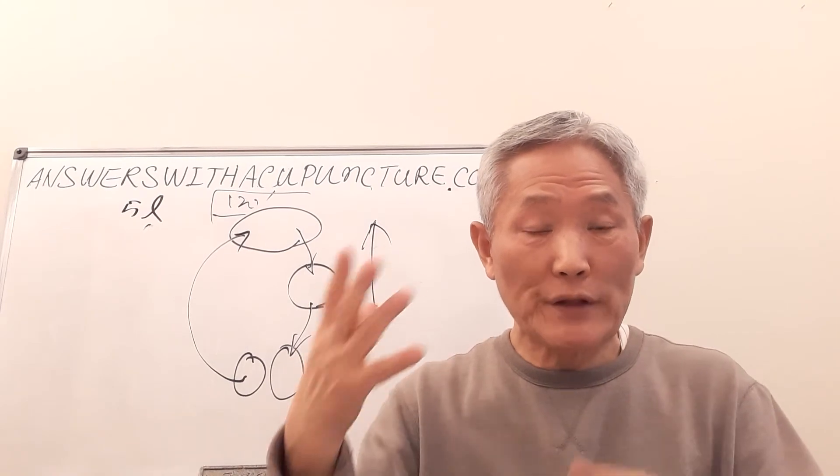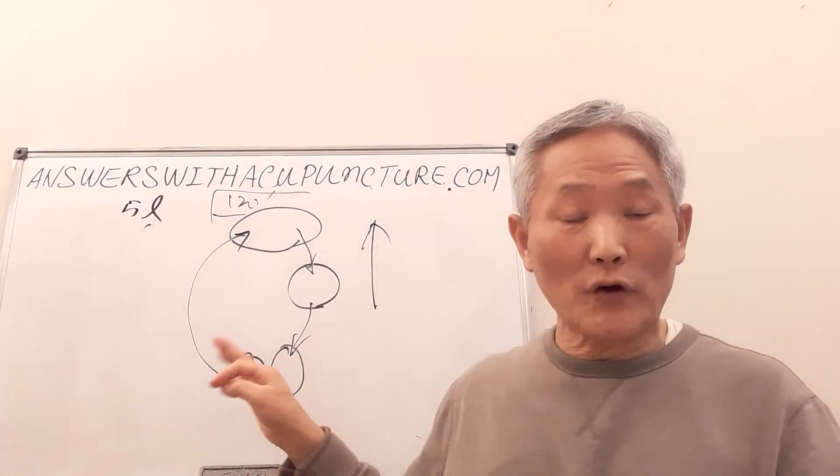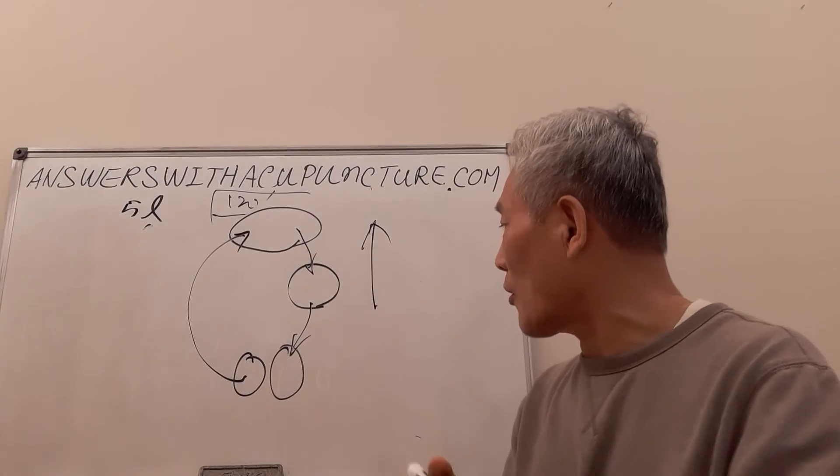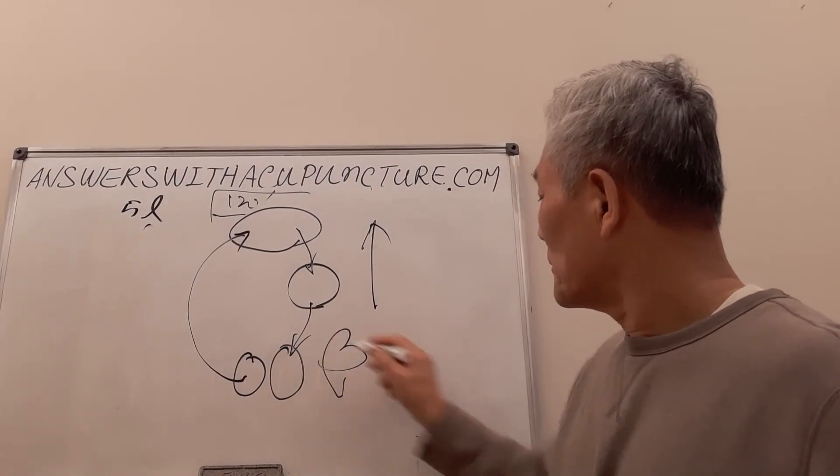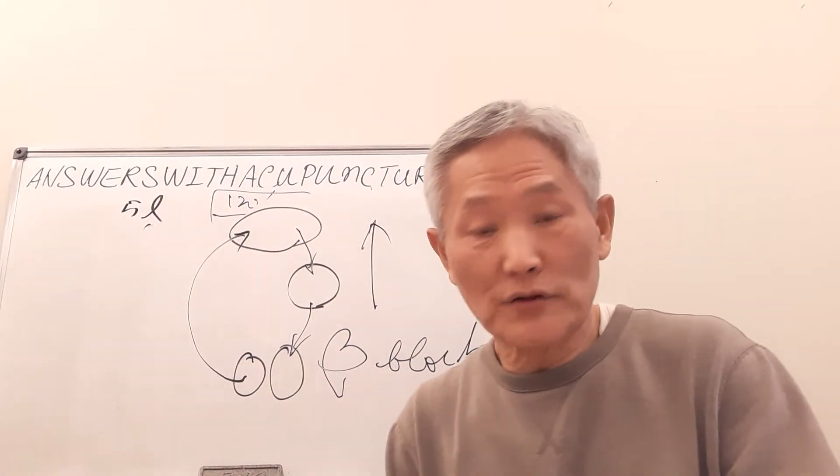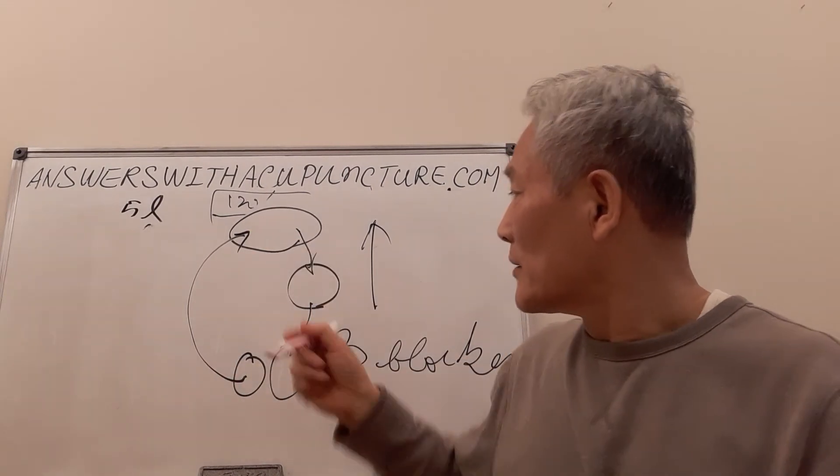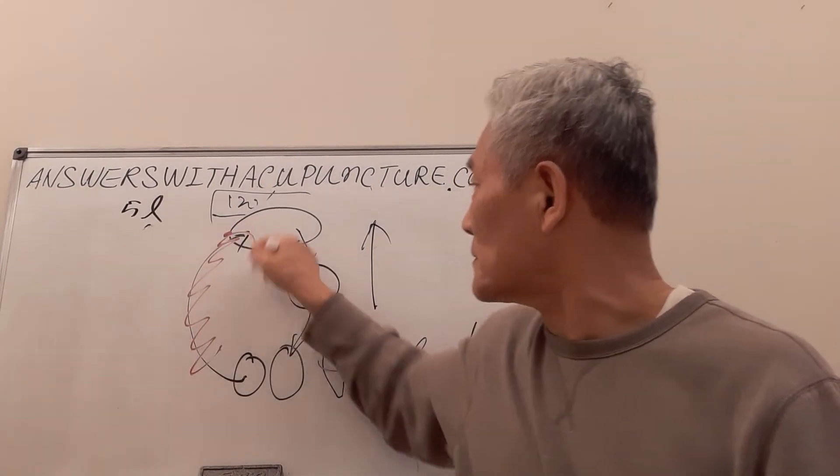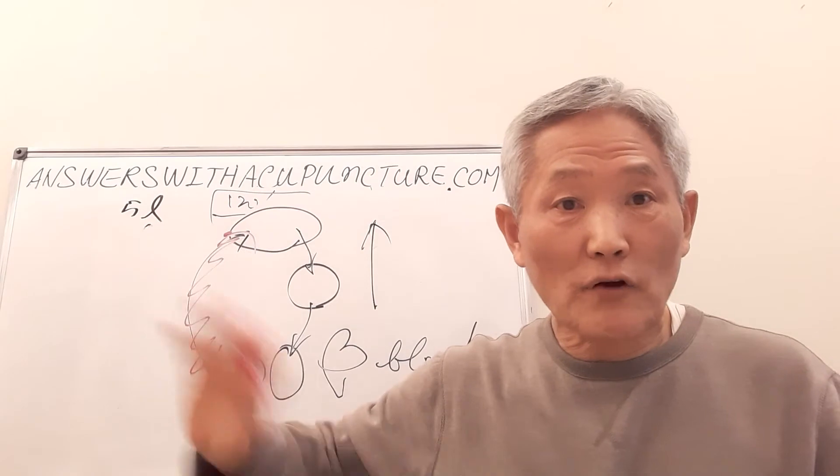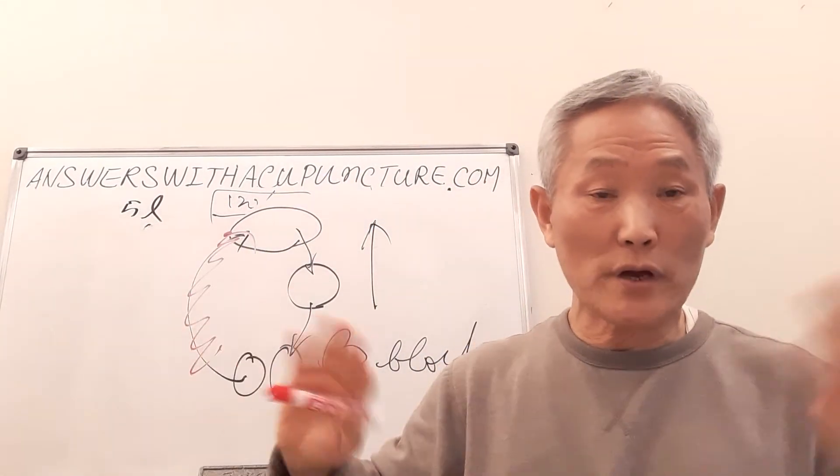Blood pressure goes up again. They cannot use diuretic anymore, they cannot use blood thinner anymore. This is another thing that came up. So they use what's called beta blocker. Now what beta blocker does is they give signal to the brain - the autonomic nervous system is nullified. They make you confused, then brain cannot distinguish what the hell is going on.